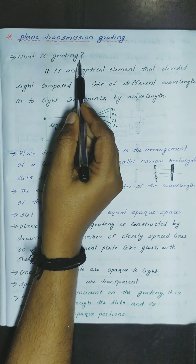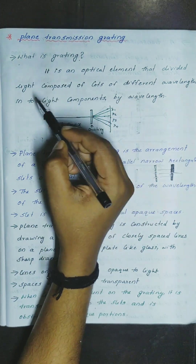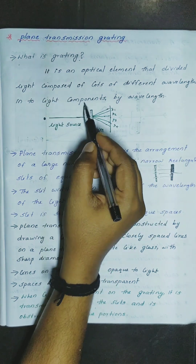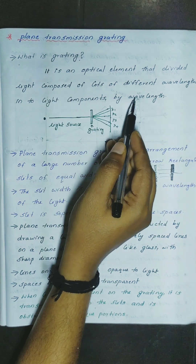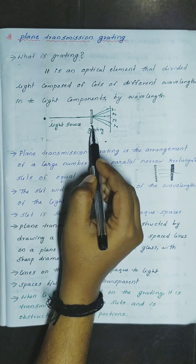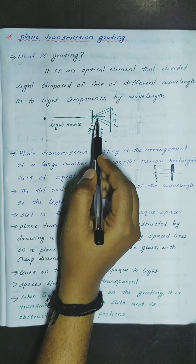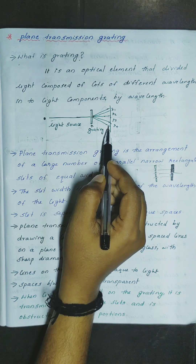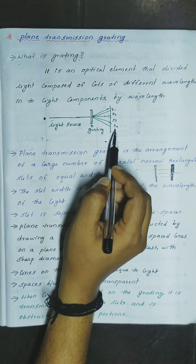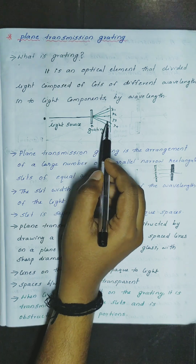What is grating? It is an optical element that divides light composed of different wavelengths into light components by wavelength. Consider this is a light source. It is incident on a grating, then the grating divides the light source into its components according to their wavelengths: lambda 1, lambda 2, lambda 3, lambda 4, etc.